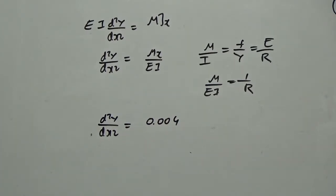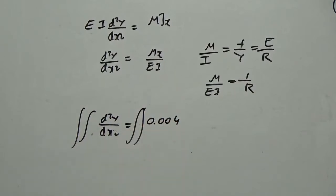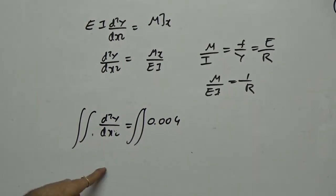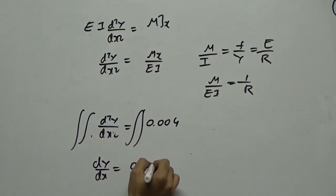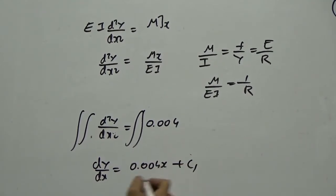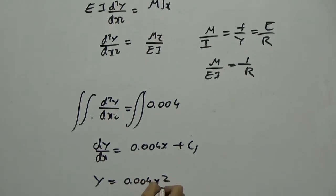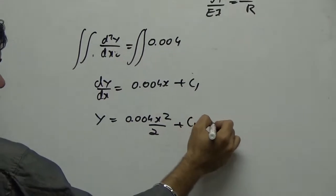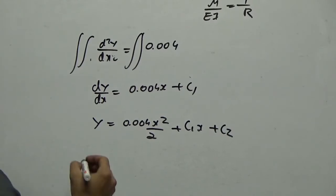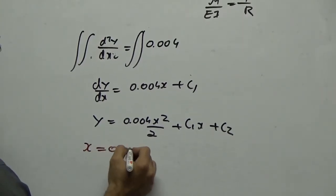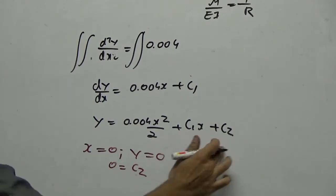Integrating once: dy/dx equals 0.004x plus C1. Integrating again: y equals 0.004x squared by 2 plus C1·x plus C2. Applying boundary conditions: at x equals 0, y equals 0, so C2 equals 0.